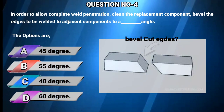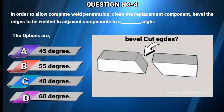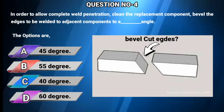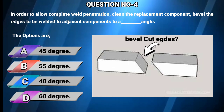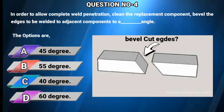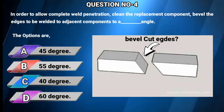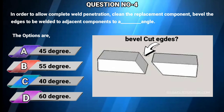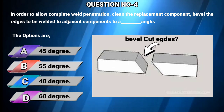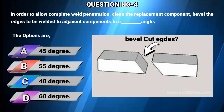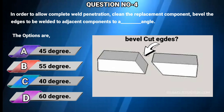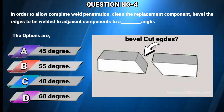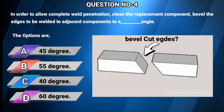Question number 4: In order to allow complete weld penetration, clean the replacement component and bevel the edges to be welded to adjacent components to a certain angle. Options: A) 45 degrees, B) 55 degrees, C) 40 degrees, D) 60 degrees. The answer is A: 45 degrees.